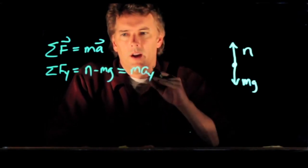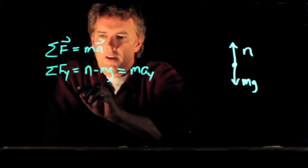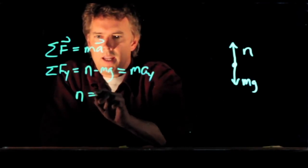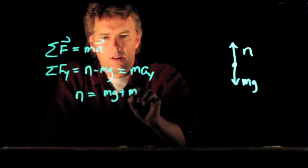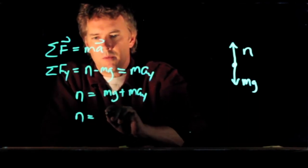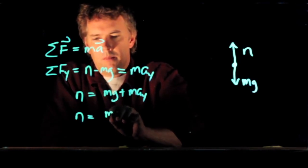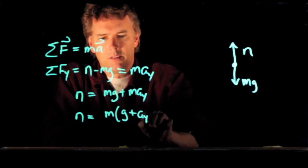Are you accelerating up? Are you moving at constant velocity or are you decelerating? Now we can solve this for N. N equals mg plus ma_y, or N equals m times the quantity g plus a_y.